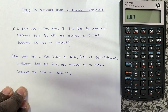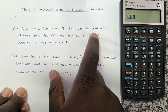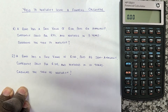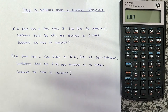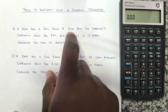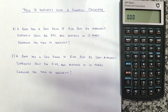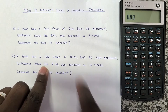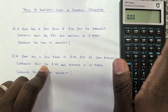Let's look at the first example. A bond has a face value of 100 rand, pays 10 rand annually, currently sells for 95 rand, and matures in five years. Determine the yield to maturity. The face value is the amount that will be received by the bondholder when the bond matures, so the face value becomes our future value — the bondholder will receive this amount at the end of five years.